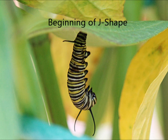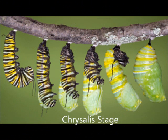This is the beginning of the chrysalis stage. The caterpillar hangs in the shape of a J through a milkweed leaf. This is the third stage, also known as the chrysalis stage. It can take anywhere from nine to fourteen days for this transformation to occur.